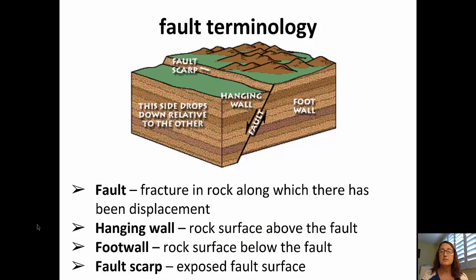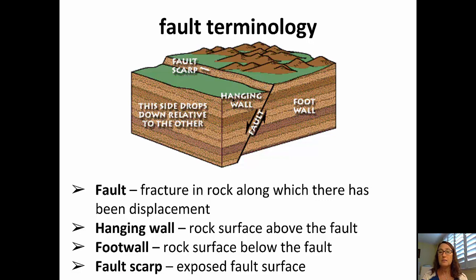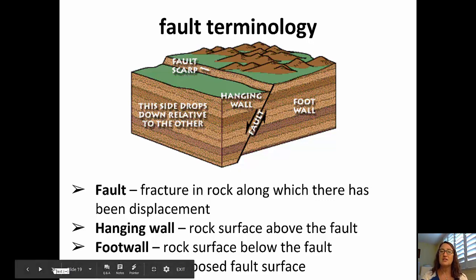Moving on to faults and some associated terminology. A fault is a fracture in rock along which there has been displacement. We have hanging walls, foot walls, and fault scarps. The fault scarp is the exposed area that is the fault surface itself. The hanging wall is the block that drops down in relationship to the foot wall. If you think about a shoe having a pointed toe — the foot wall also has a pointed toe — that's a good way to remember which one is the foot wall.